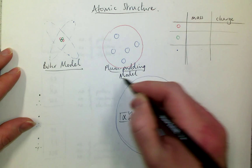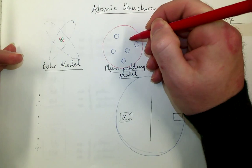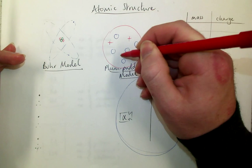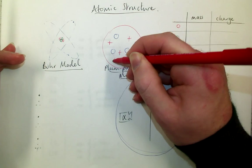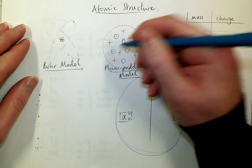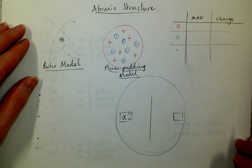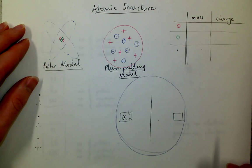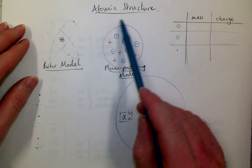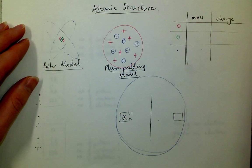This was called the plum pudding model. Just like a pudding, I think people these days might prefer to think of it as the muffin model. It was like an atom had a positive kind of cake in which there were these small things which could be knocked off called electrons, which were the negatively charged part of the atom. They knew a lot of the same things that we know about atoms. They knew they were overall neutral. They knew there was a small thing called an electron that could come off at any point.